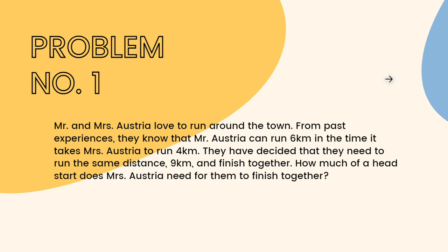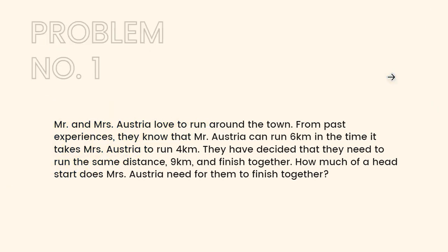They have decided that they need to run the same distance of nine kilometers and finish together. How much of a head start does Mrs. Austria need for them to finish together? Now that the problem has been laid, let us implement Polya's four-step method.